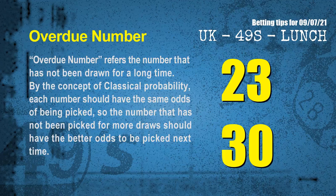The final information for you is overdue numbers. An overdue number refers to a number that has not been drawn for a long time. By the concept of classical probability, the number that has not been picked for more draws should have better odds to be picked next time. After counting thousands of results, the most overdue two numbers are 23 and 30.